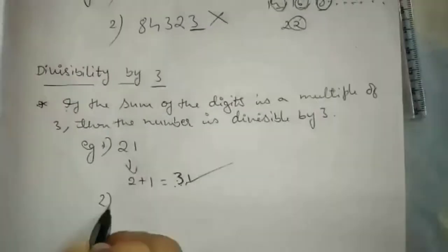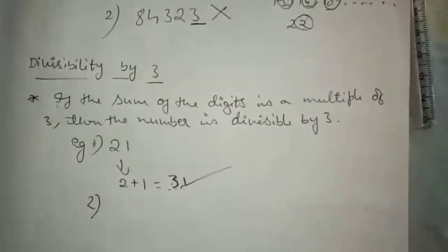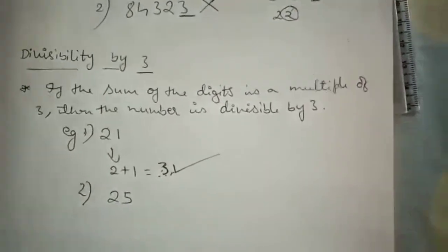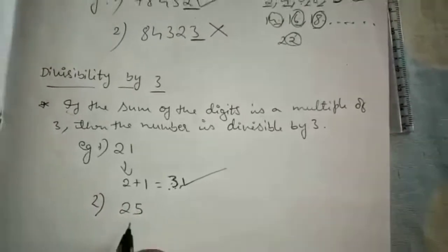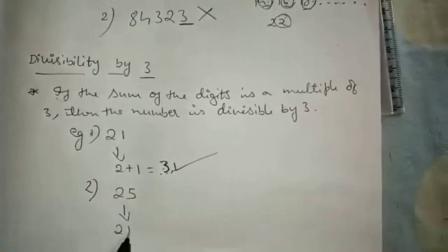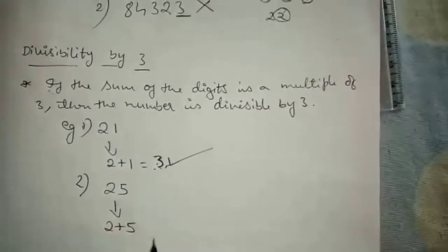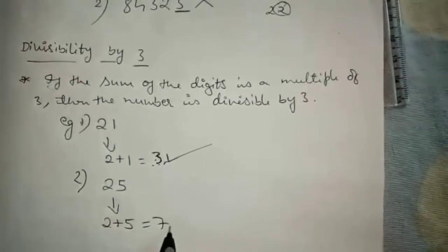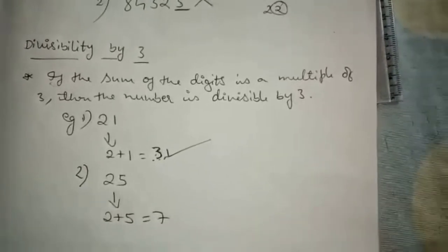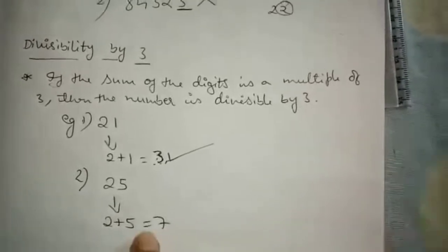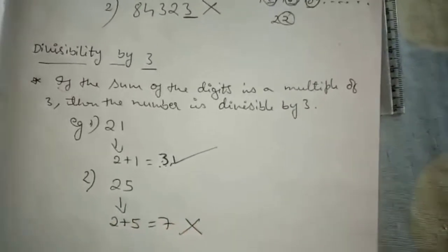One more example: take 25. Whether it is divisible by 3 — you have to add those digits. 2 plus 5 is 7. Whether 7 is a multiple of 3 — does 7 appear in the table of 3? No. So it is not divisible by 3.